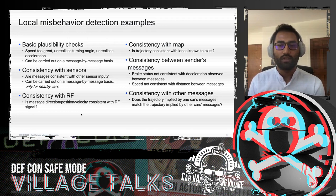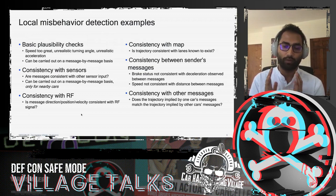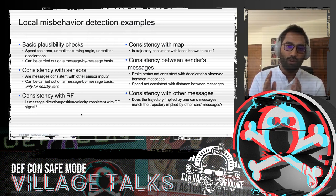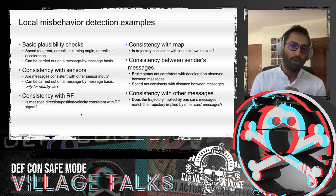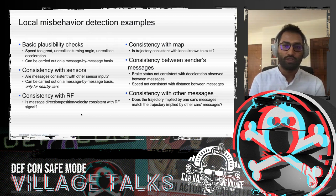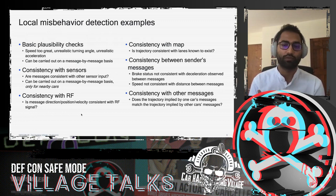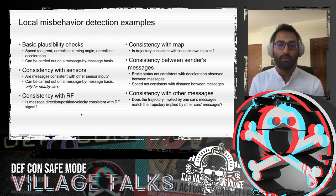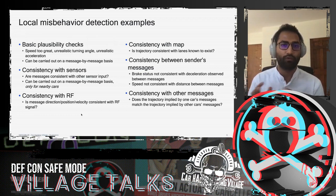We also check consistency with other vehicles' messages. On a one-way highway, if all vehicles head in one direction but one transmits in the opposite direction, that is likely misbehavior. More generally, we look at whether a vehicle's implied trajectory — including speed — matches what other vehicles are doing.